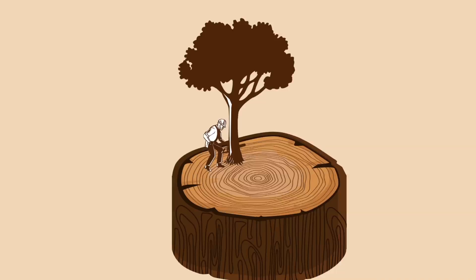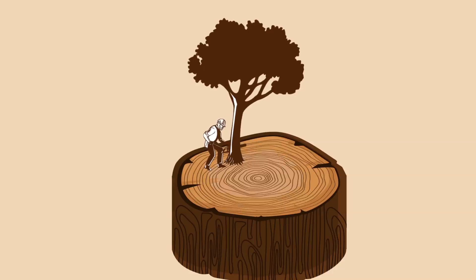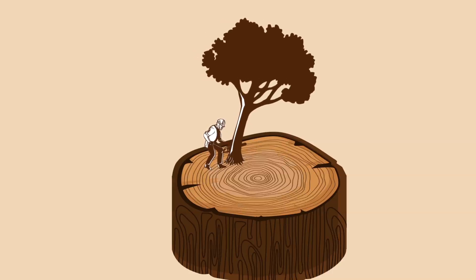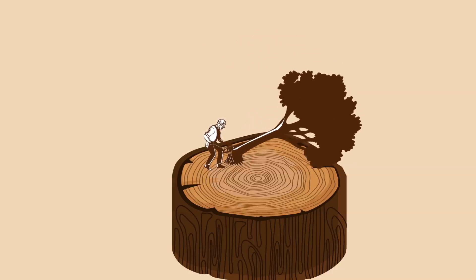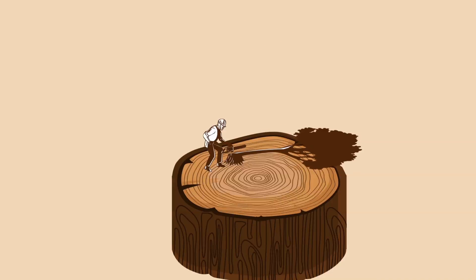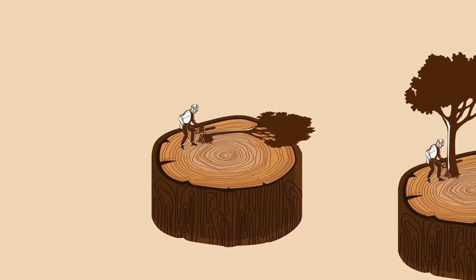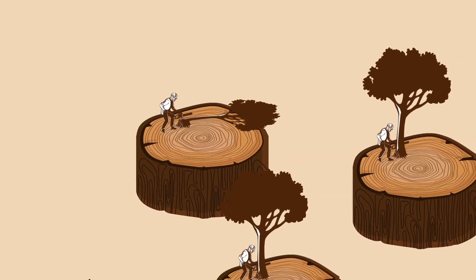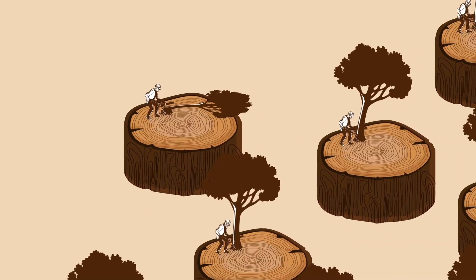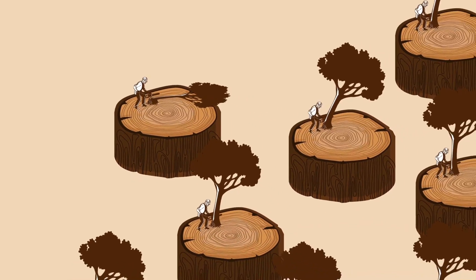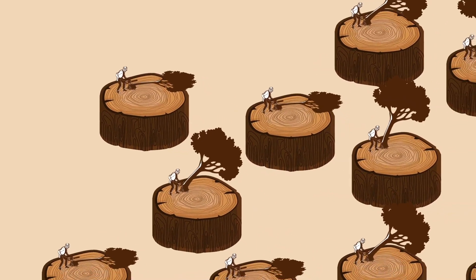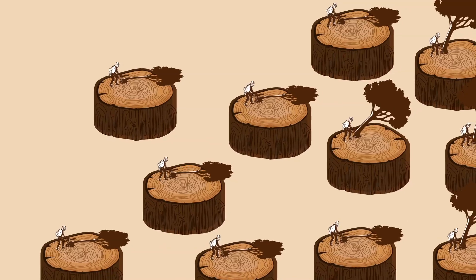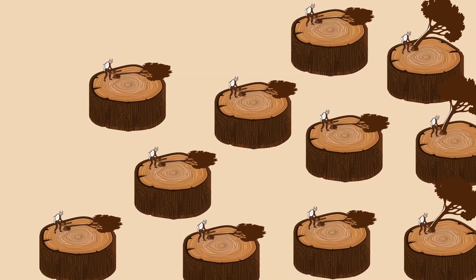Deforestation is the cutting down of trees indiscriminately in a forest area. Under colonial rule, it became very systematic and extensive. We shall now see why this took place.